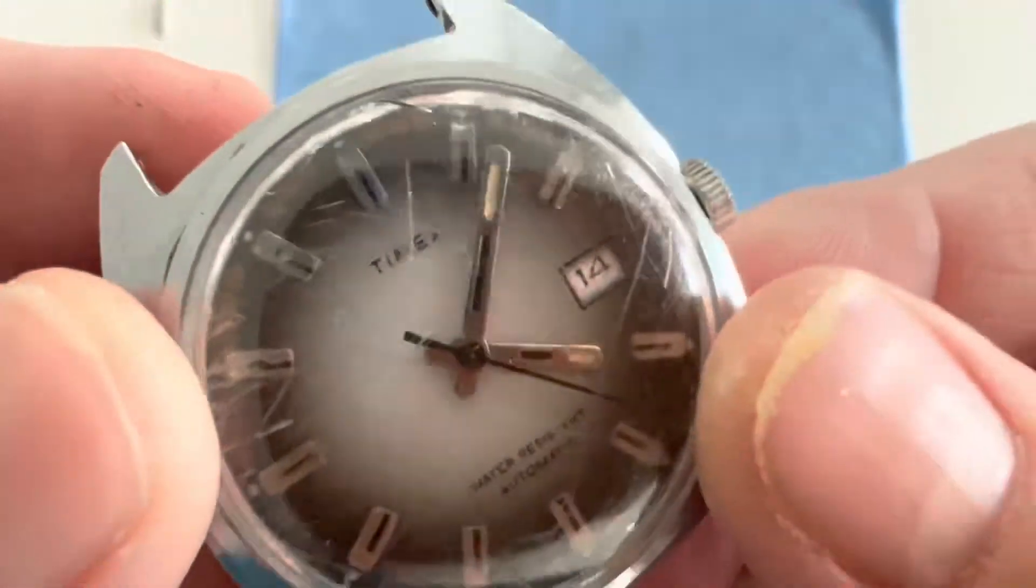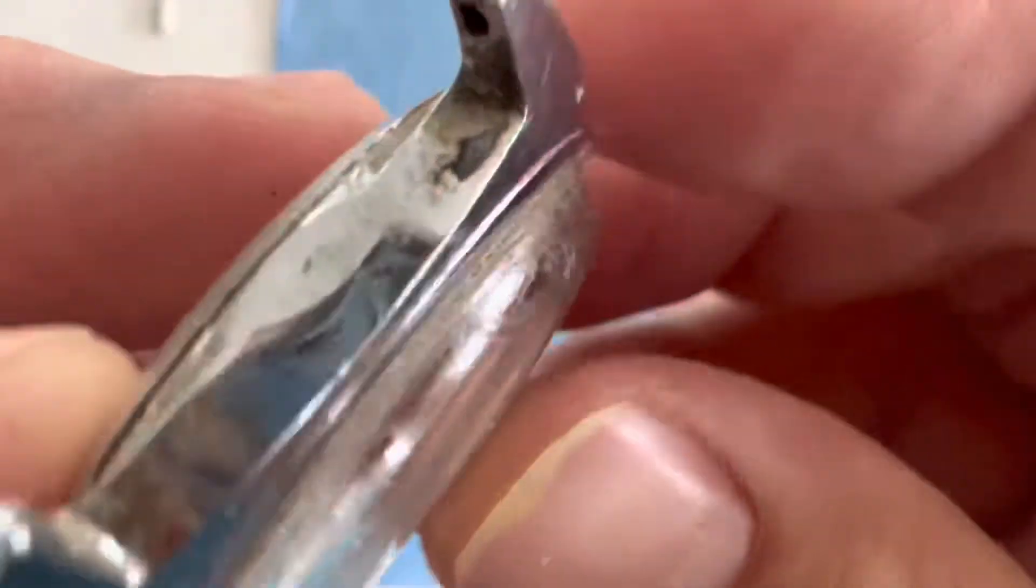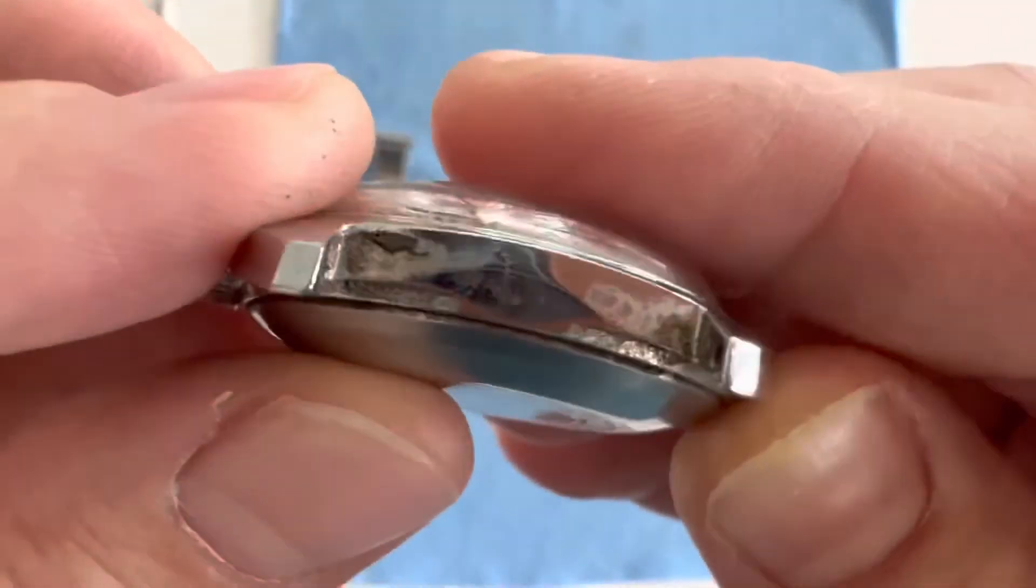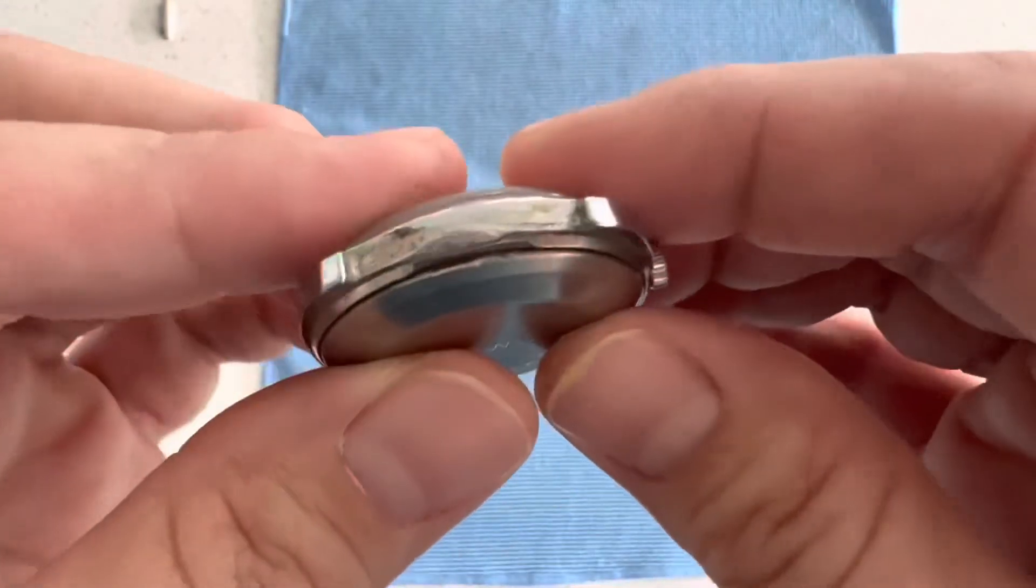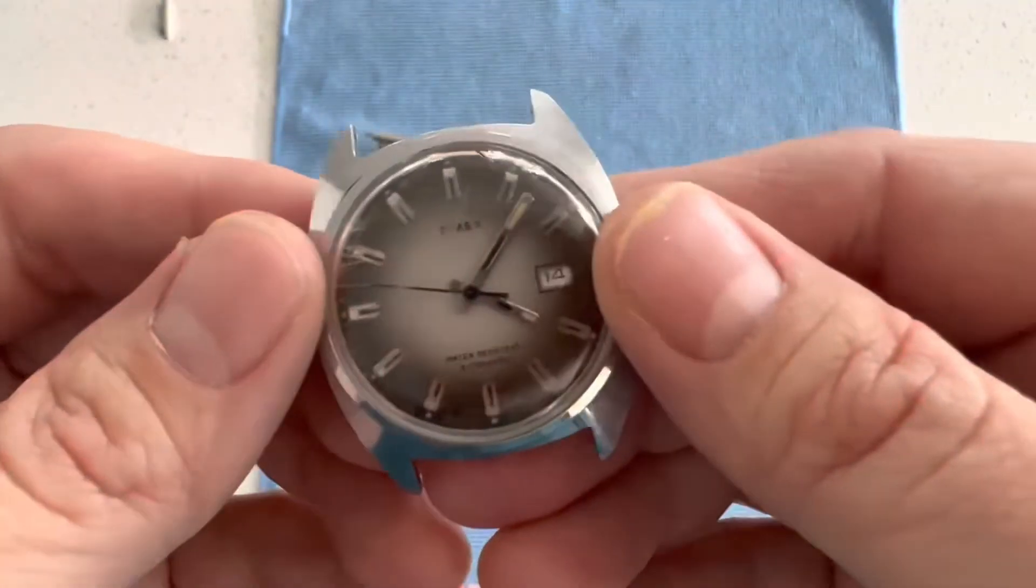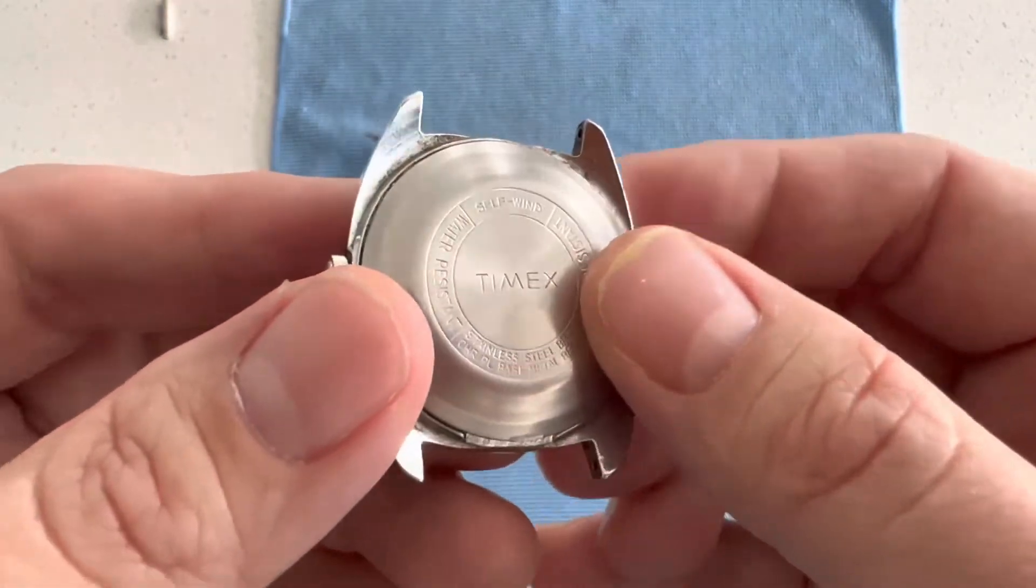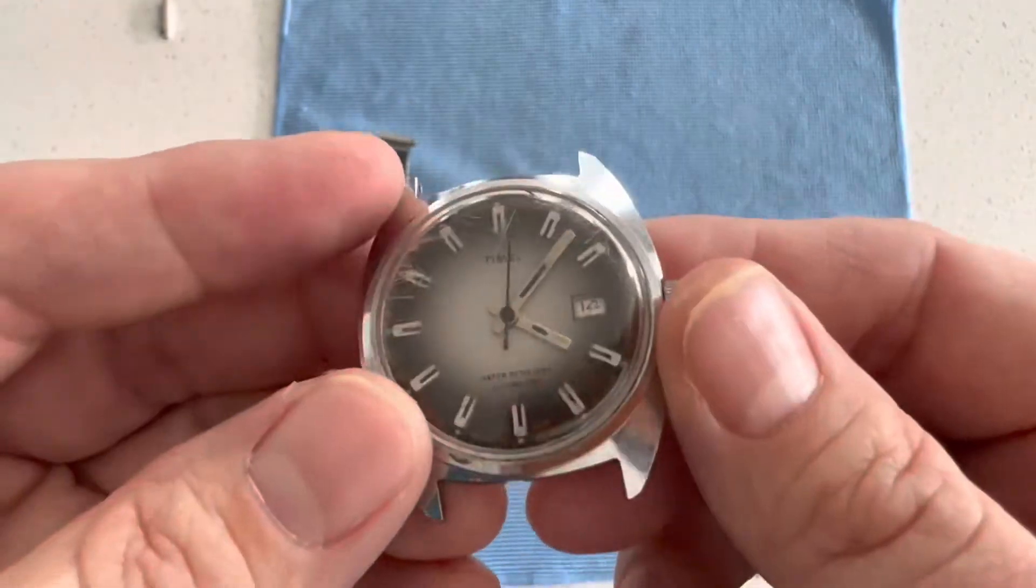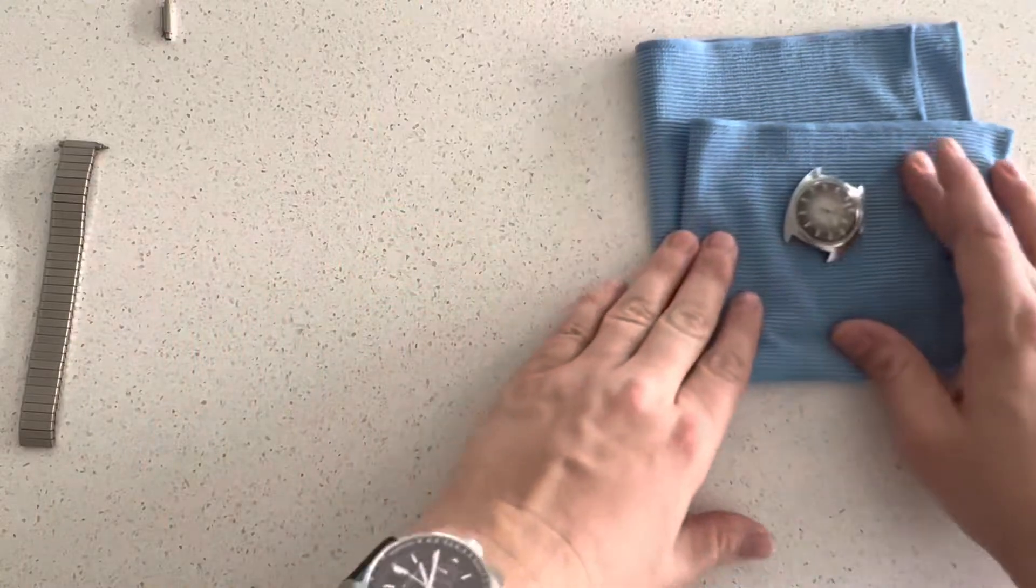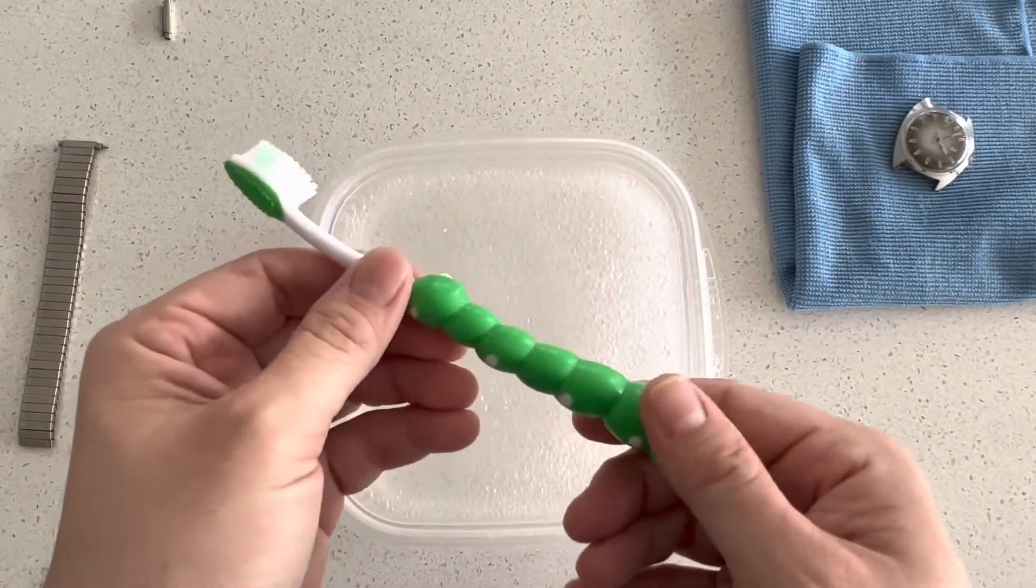This is the watch, the Timex, off of its bracelet and there's a lot of work to do here. I'm an amateur and this is a $20 purchase from eBay, so it gives me a chance to work on something without losing thousands of dollars or incredibly depreciating the value of something that's very valuable. We'll get to cleaning. We'll probably start with the bracelet here. Put this over here. We'll bring in warm soapy water and our caterpillar toothbrush.